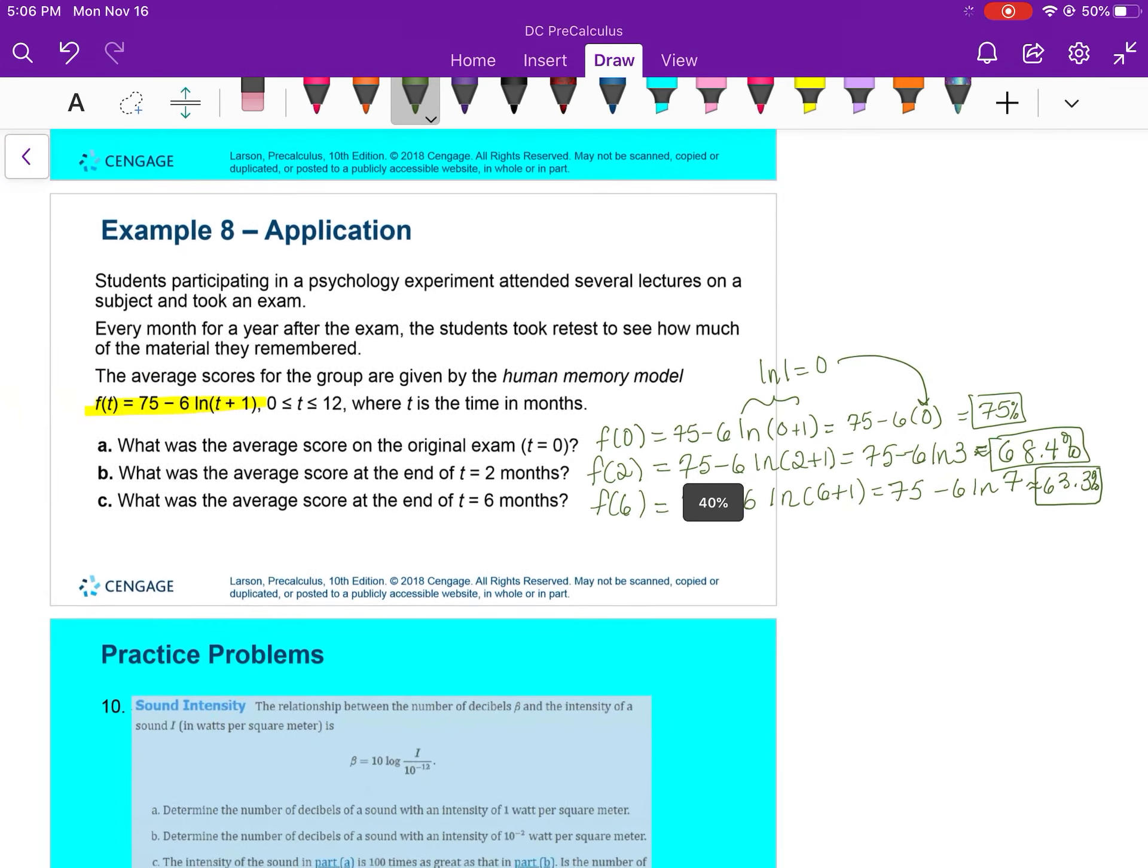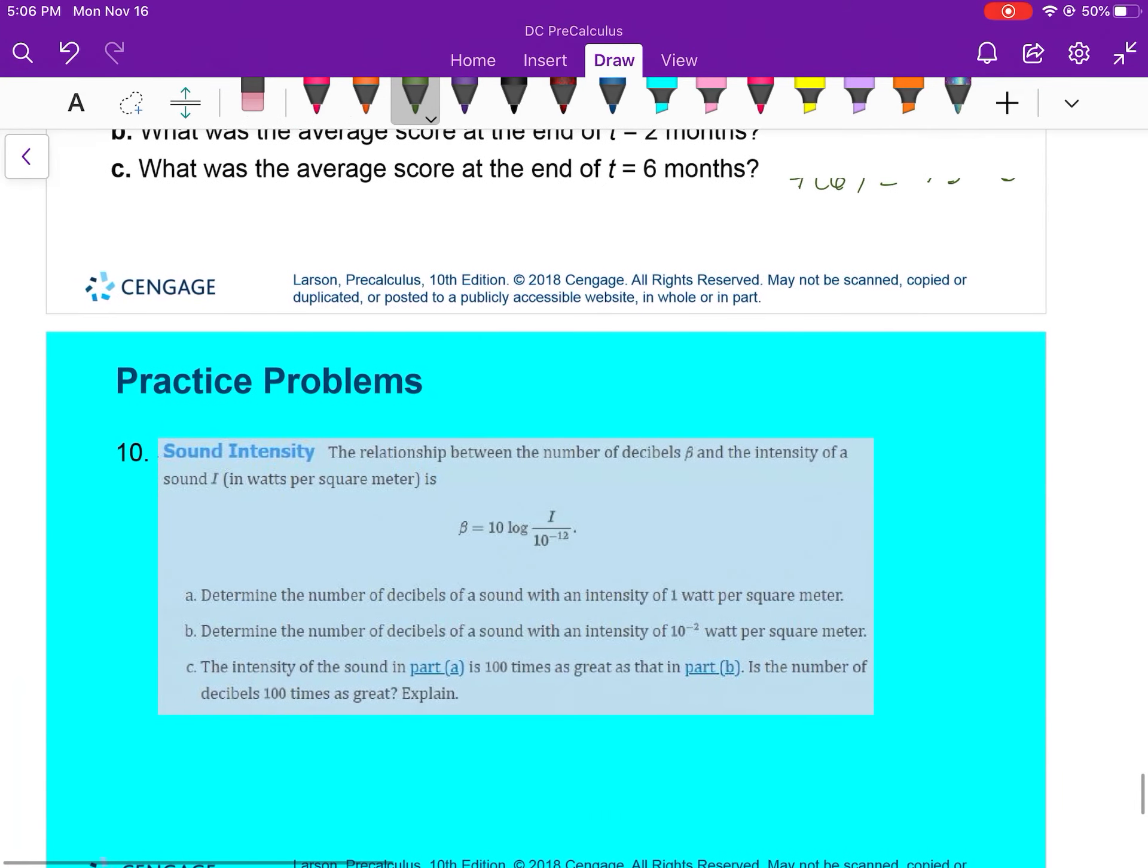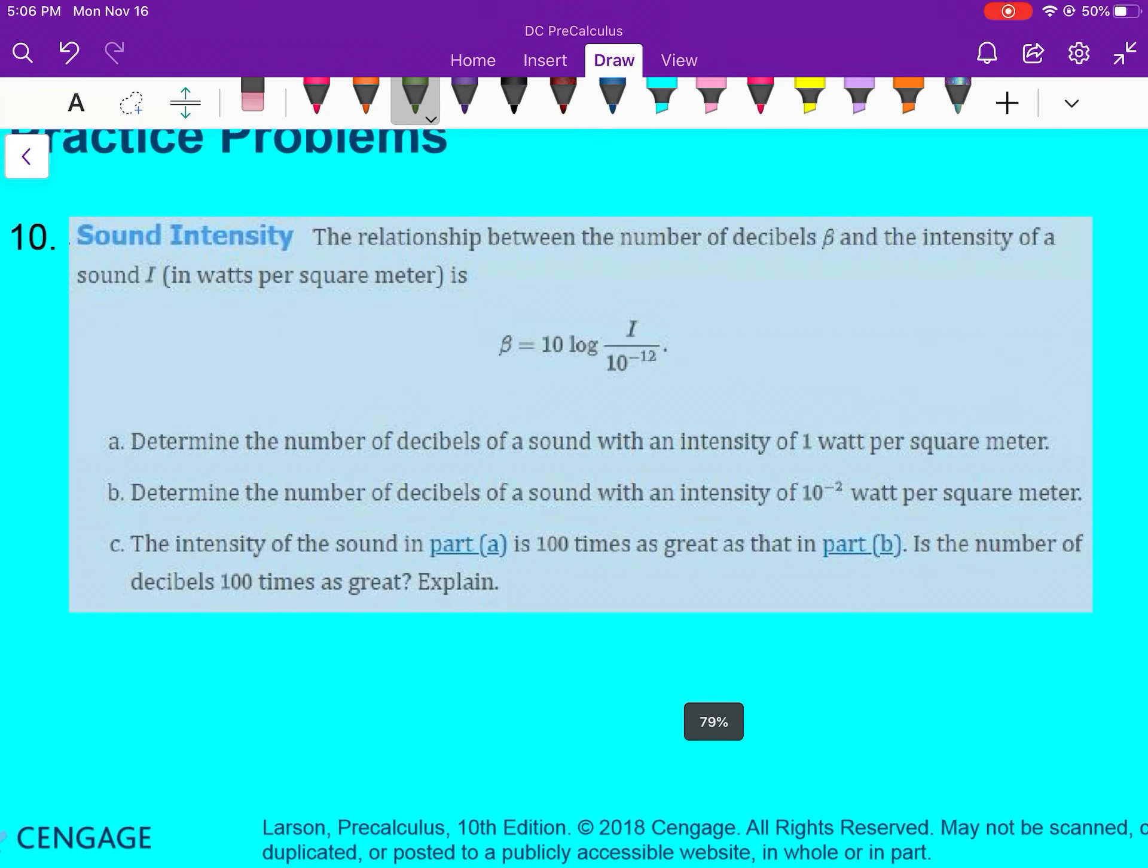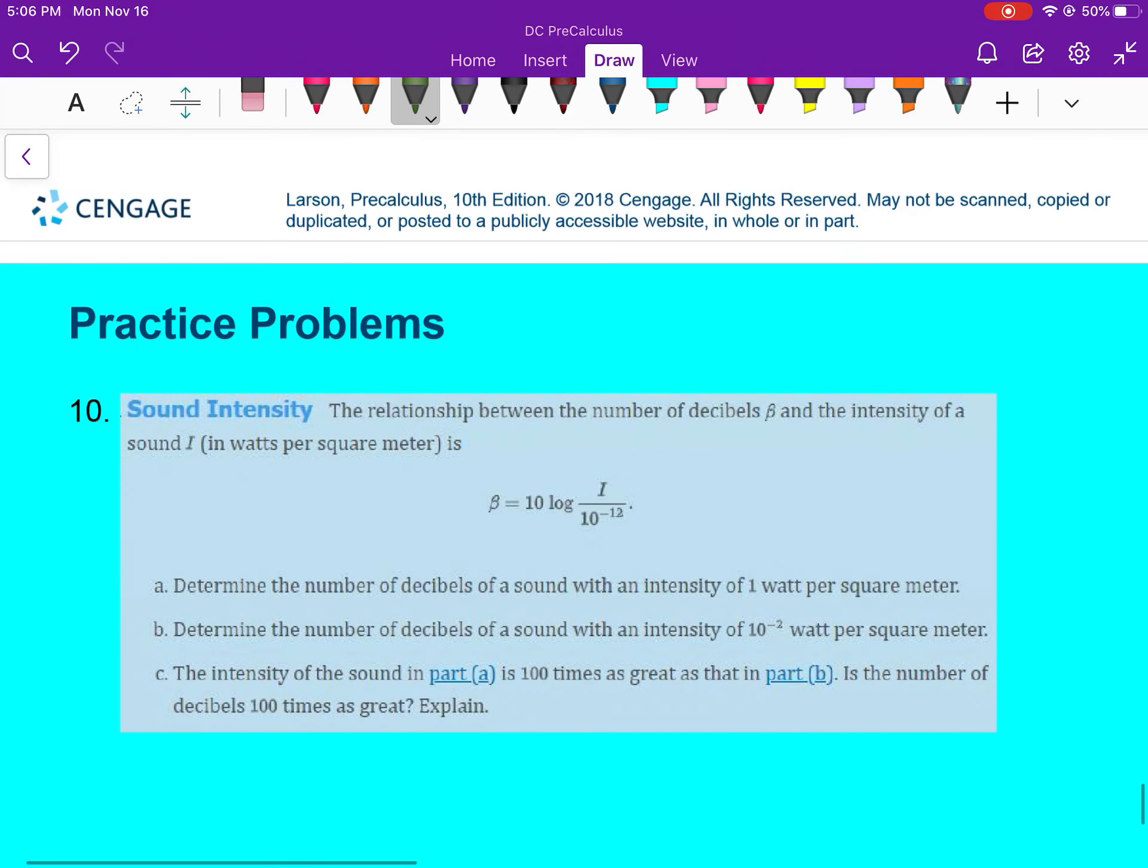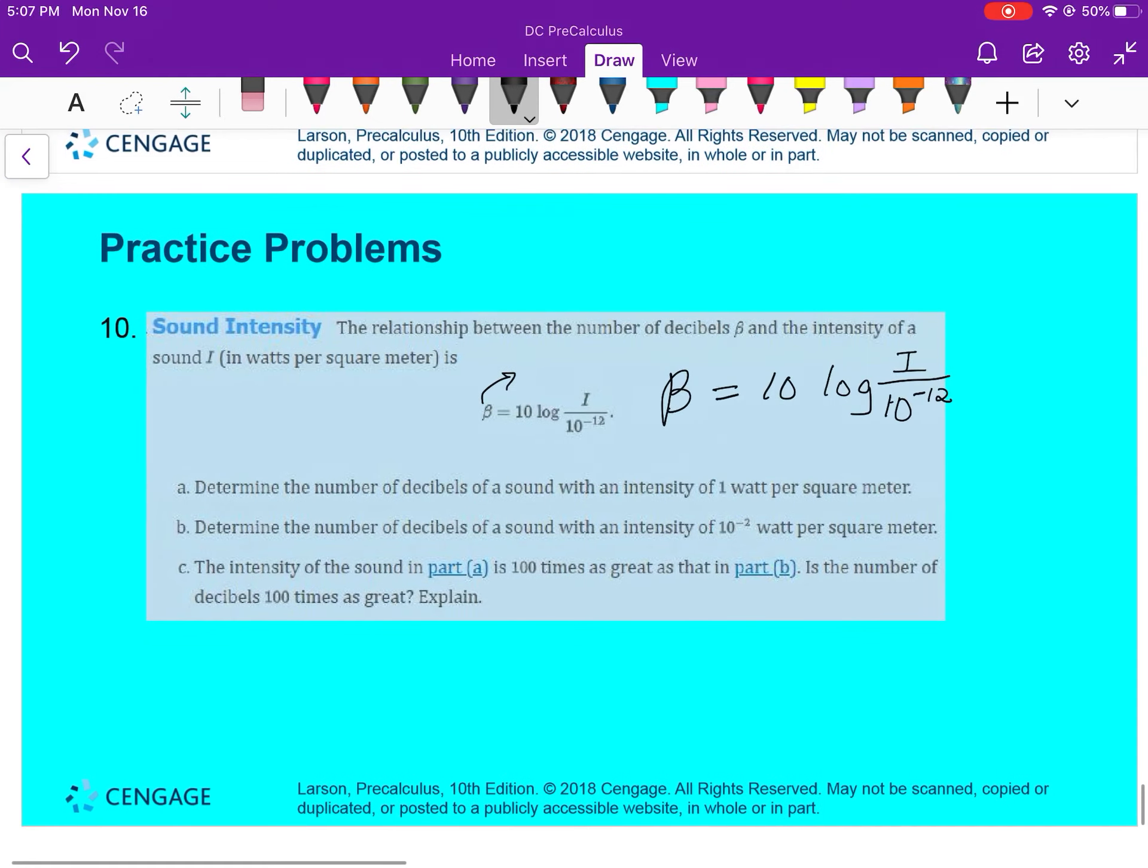That is then the end of this lesson for two. You have one practice problem, and I think if you make it big enough, you'll be able to read everything. It should be pretty self-explanatory. I think you should do okay with it. This is a Greek letter beta, so this is beta equals 10 times the log of the letter I over 10 to the negative 12th, and they tell you what everything stands for in the problem.